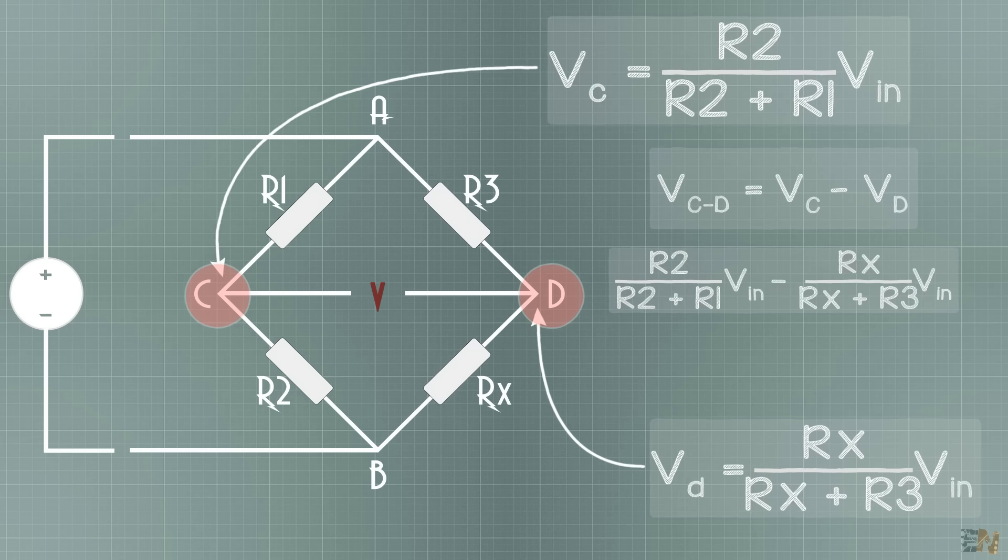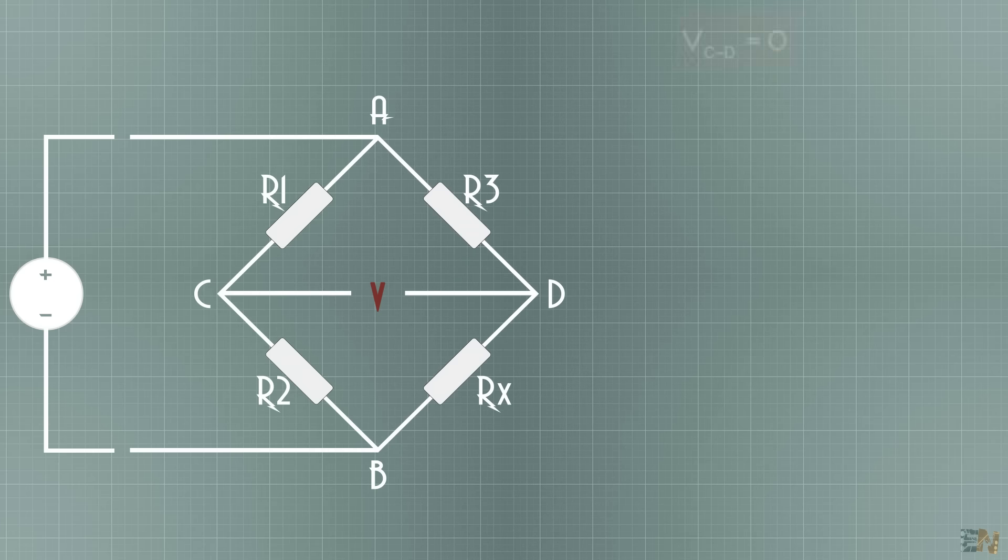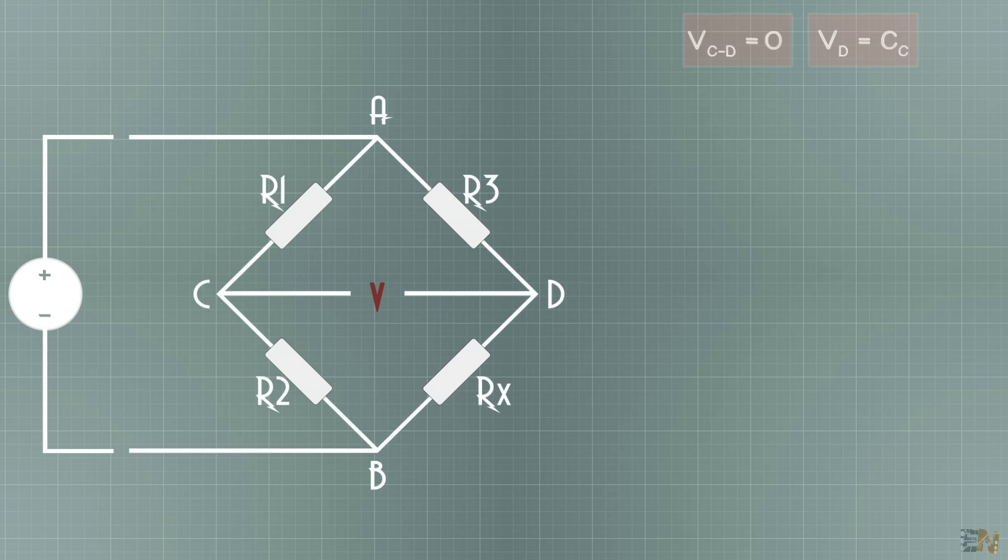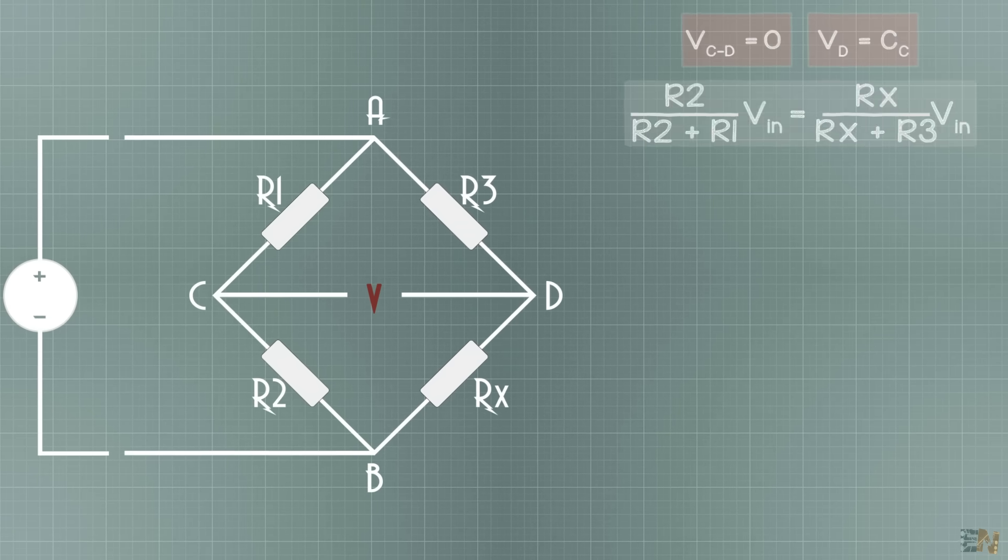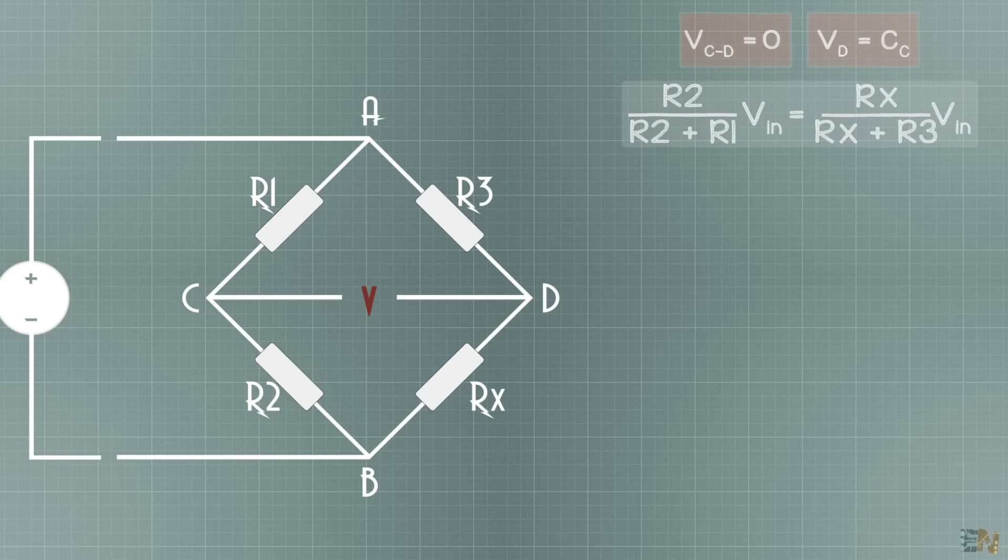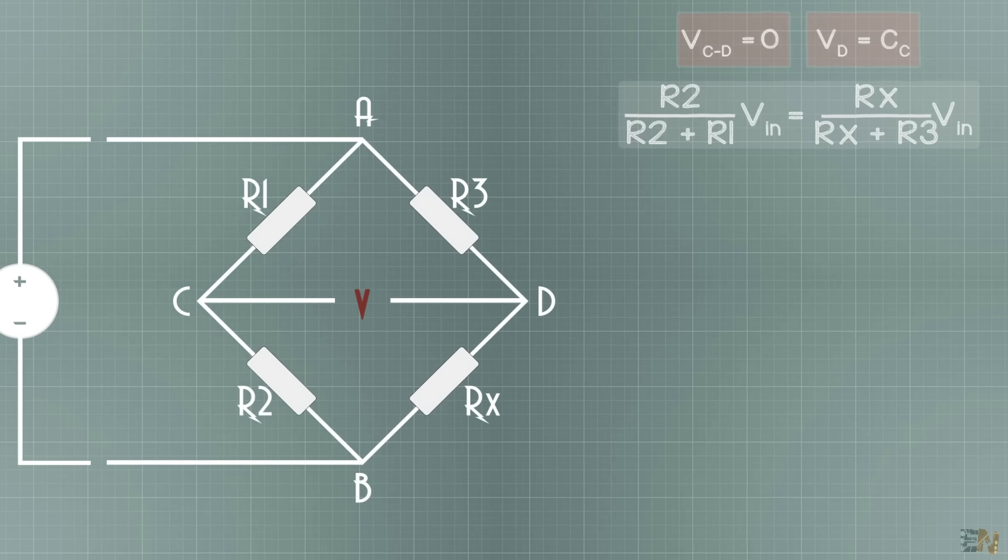But what we are looking for is a balanced bridge. And that is when the voltage between C and D is equal to zero. So if we imply that the voltage CD is equal to zero, we get that the voltage on C is equal to the voltage on D. That means that one divider is equal to the other divider value.